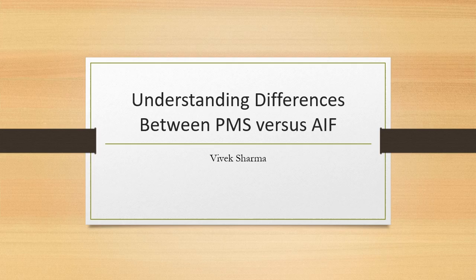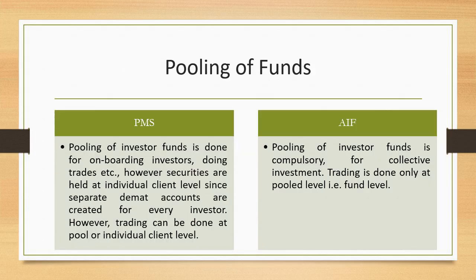In this video I will take you through some of the nuances between the two so that you get a clear picture about the differences between PMS and AIF. Let me start by explaining the concept of pooling of funds. Portfolio management services as well as alternative investment funds both pool money from various investors — they are investment vehicles which do pooling of funds. Once the funds are pooled they are invested by the fund manager in both cases, whether PMS or AIF. Let us see how there is a difference in pooling of funds between the two.